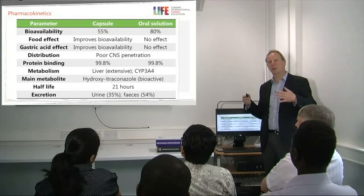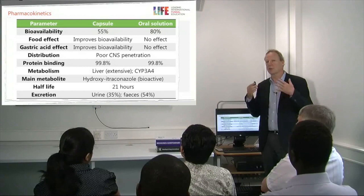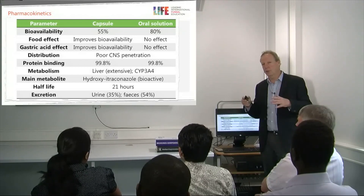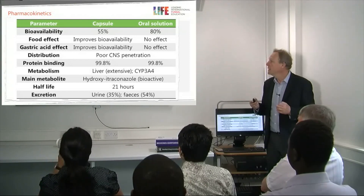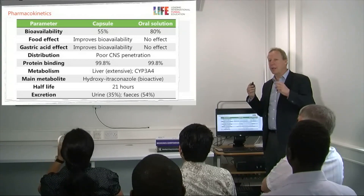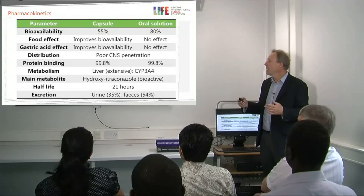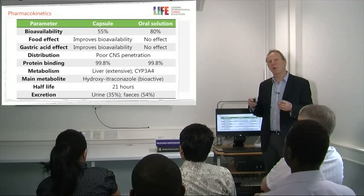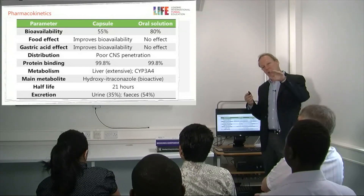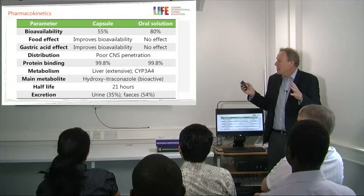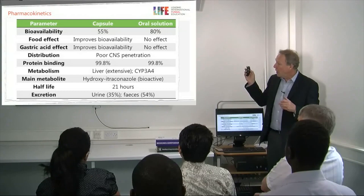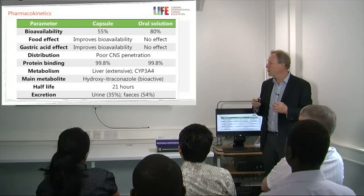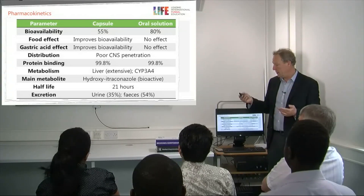We always advise patients to take itraconazole capsules with food, or with Coca-Cola or orange juice, as acidic drinks are also valuable. Gastric acid is important for absorption. The solution, however, is absorbed whether or not food is taken. Itraconazole doesn't get into spinal fluid but does get into brain tissue, particularly when there's infection. It's highly protein-bound and metabolized by the liver. It has a metabolite, hydroxy-itraconazole, which itself has antifungal activity. The half-life is 21 hours at low dose, rising to 35 hours at higher or steady-state doses. It is excreted in urine and faeces as metabolites.